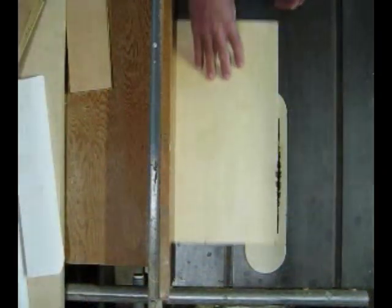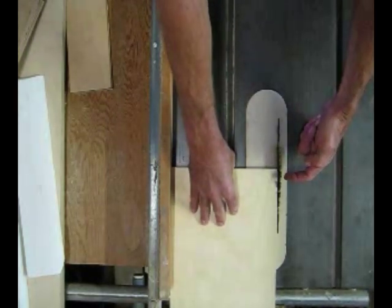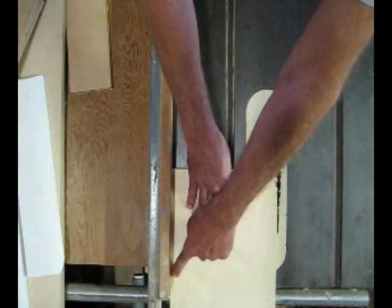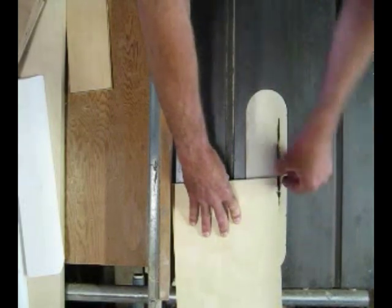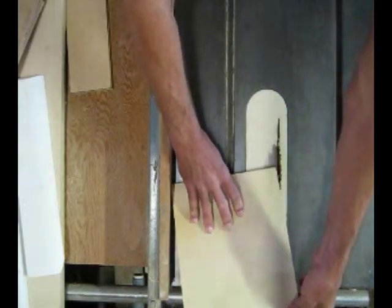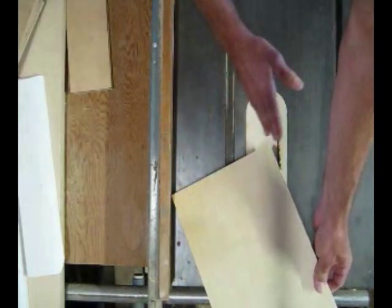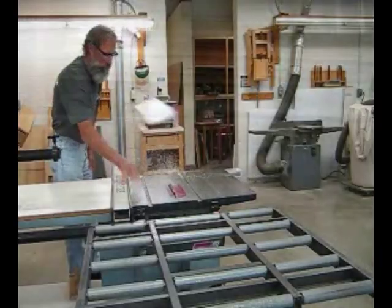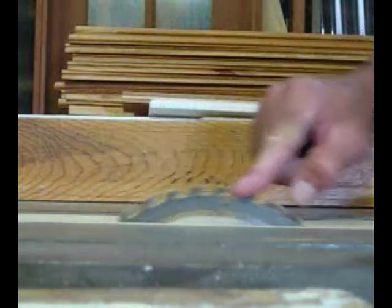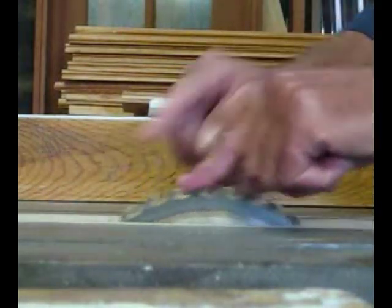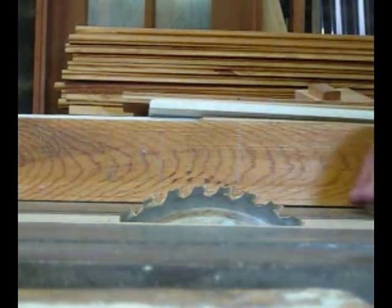Most kickbacks occur when the back of the board passes the center line of the blade and the board comes off the fence, catching the teeth on the back of the blade, lifting the board, pinching it between the blade and the rip fence. The blade is spinning towards you as it cuts the wood.